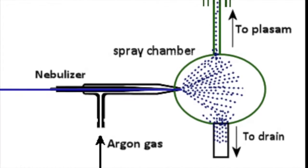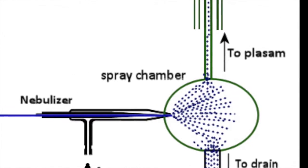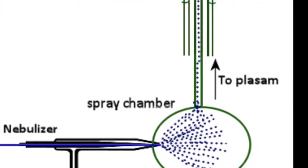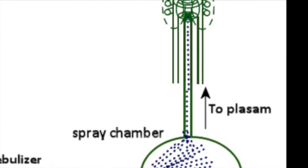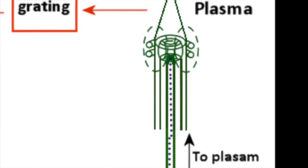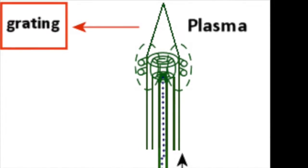This atomizes the liquid water sample, turning it into many tiny droplets, producing a fine spray, and moves them along with argon gas into the torch assembly.